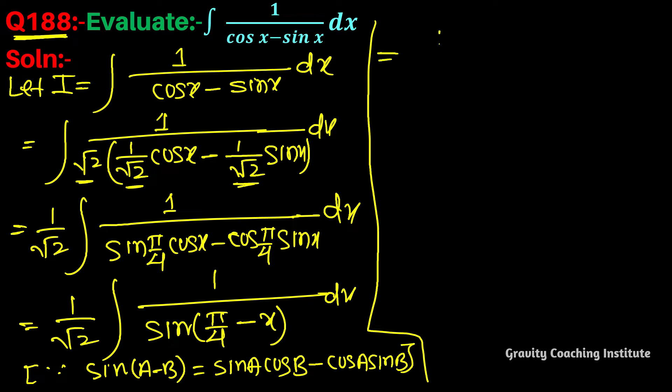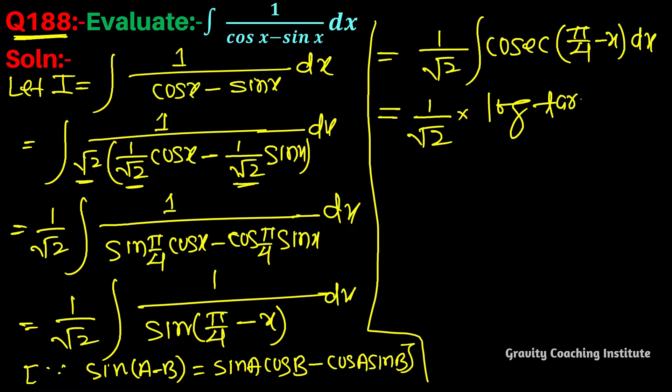Equal to 1 upon root 2 into integration, and 1 by sin, the formula will be cosec. So this will be cosec of pi by 4 minus x. Equal to 1 upon root 2, and cosec x formula is log tan x by 2, so in place of x this will be...